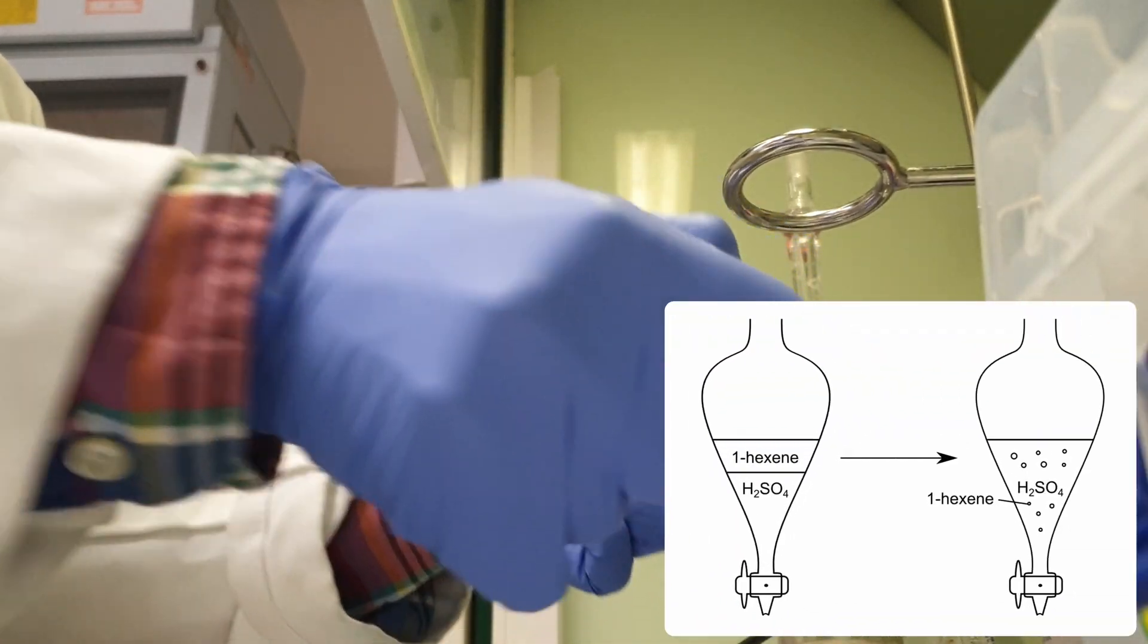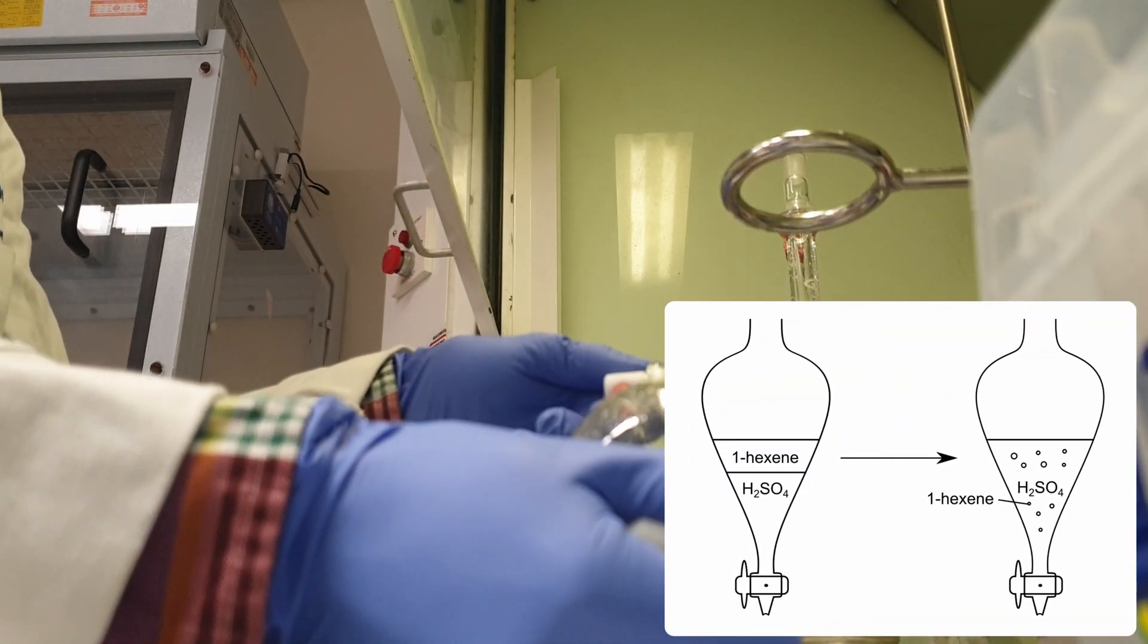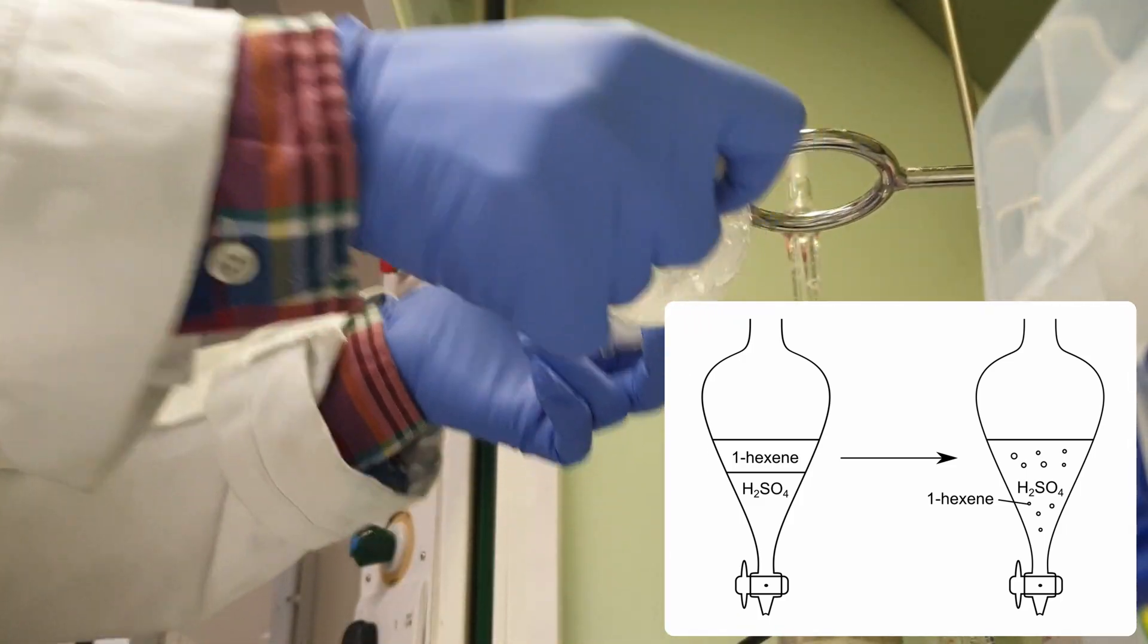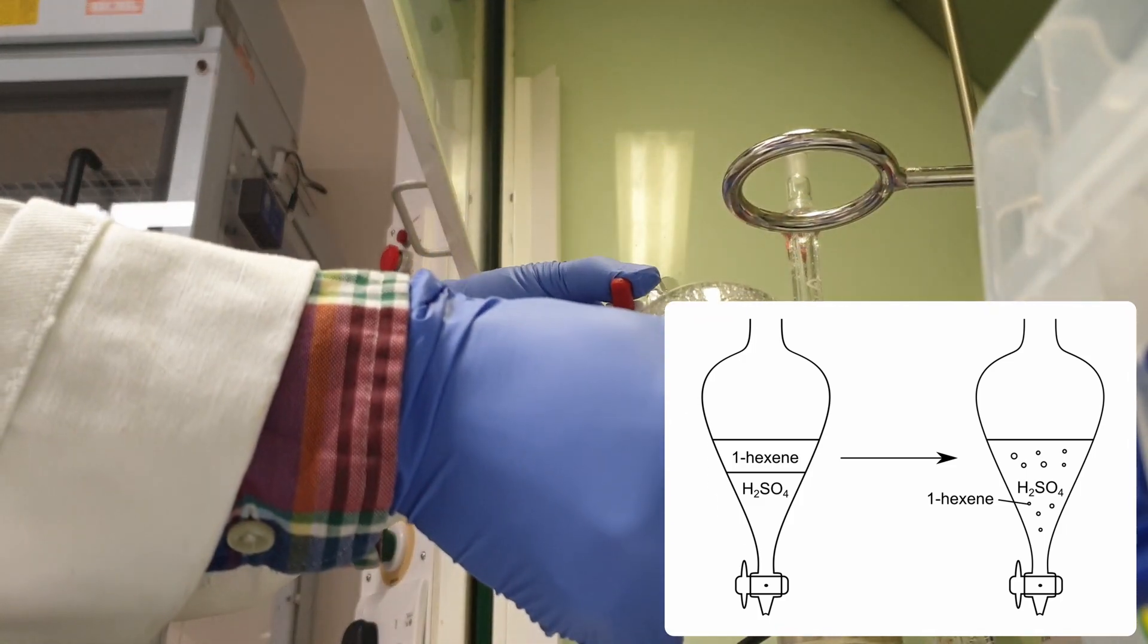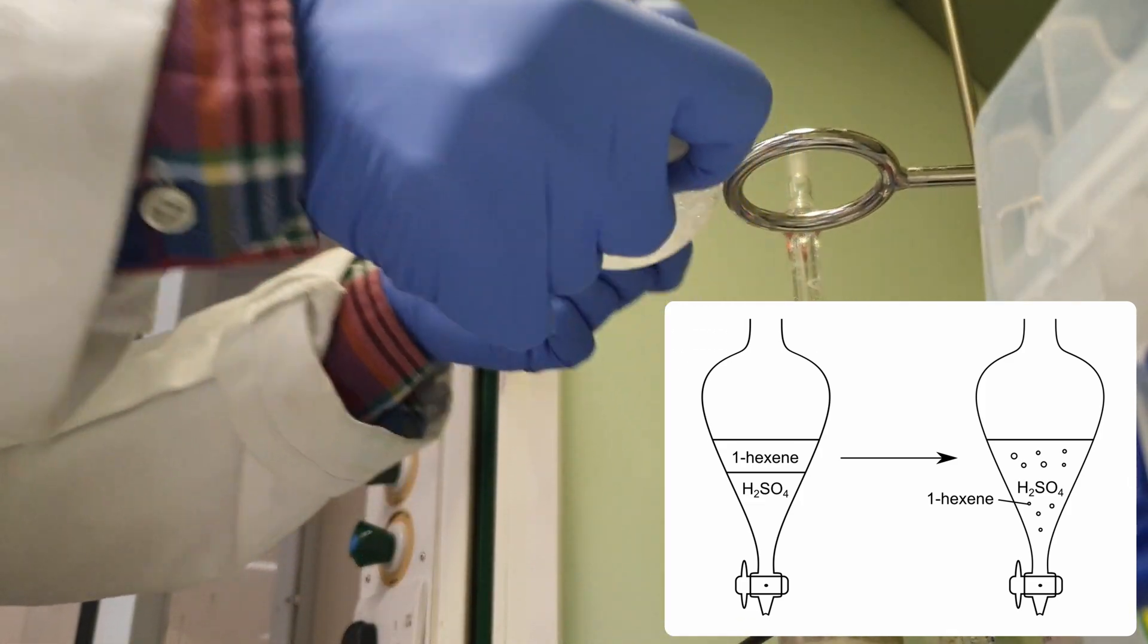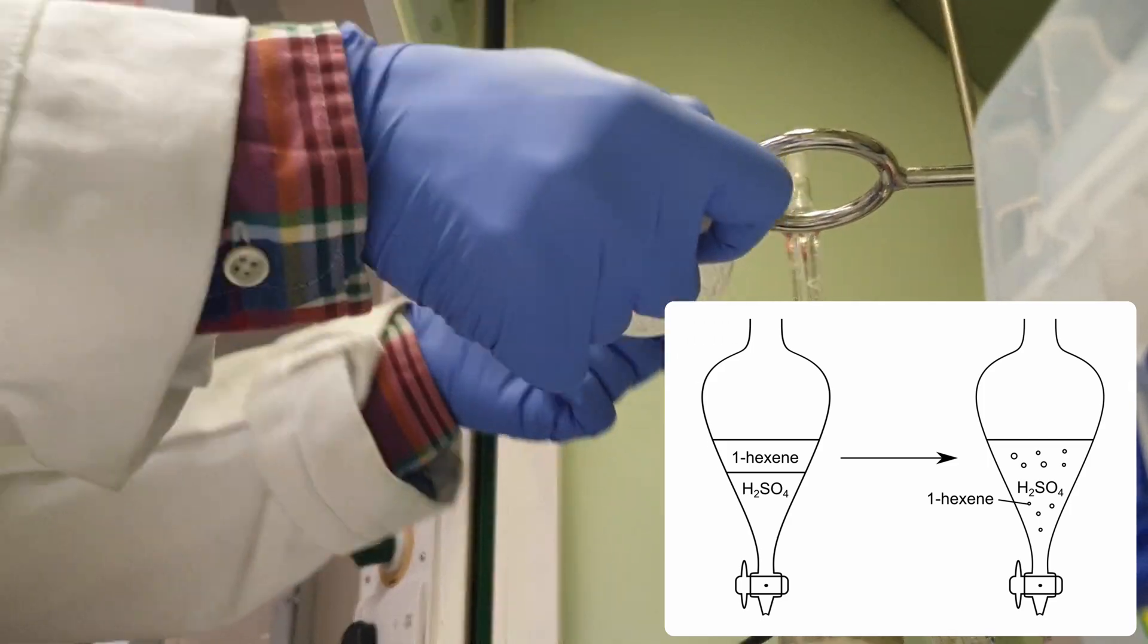In the first step of this reaction I have two layers, a layer of hexene and a layer of sulfuric acid. I'm going to shake them together vigorously with venting to release any buildup of pressure to create a suspension of hexene in sulfuric acid.